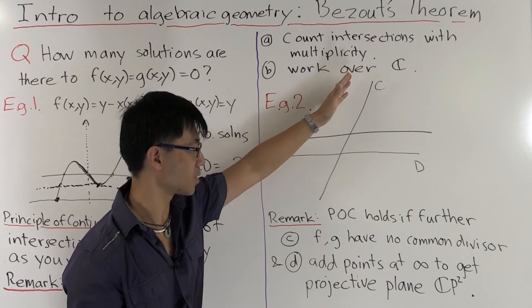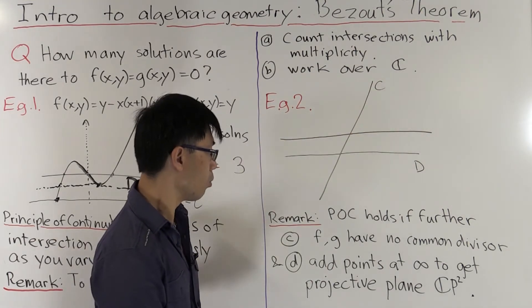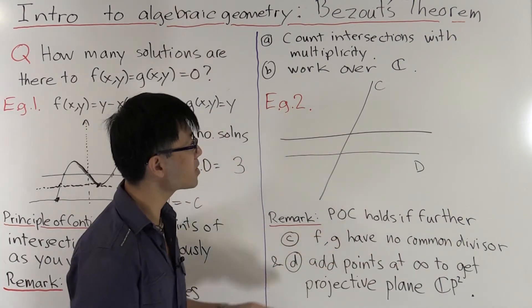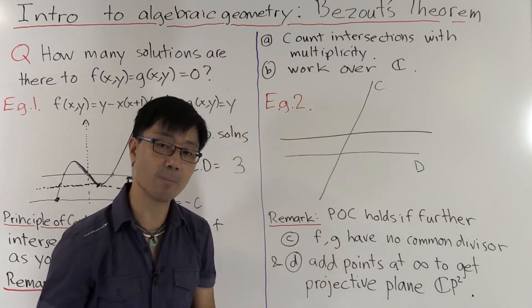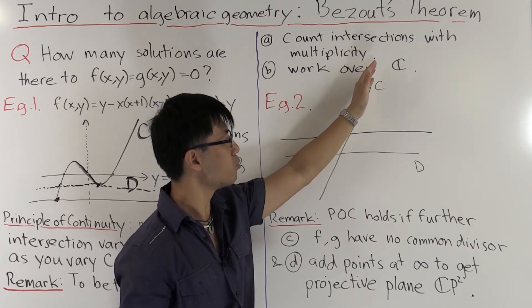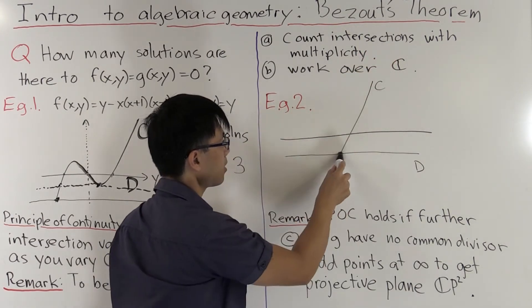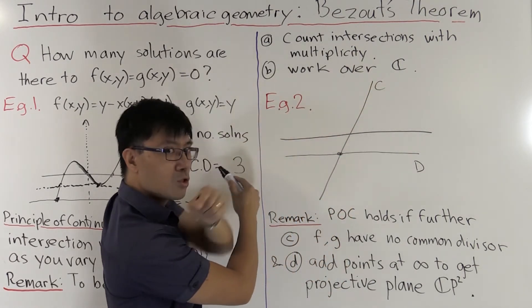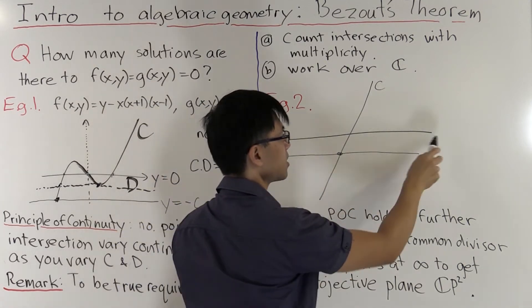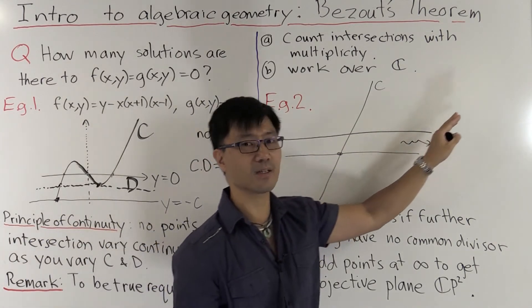The first thing is that we exclude the case where you have the same curve. More generally, we require that F and G have no common divisor — if they do, there's going to be an infinite number of points of intersection. The other issue is the point that disappeared when rotating to a parallel line: as you rotate, the intersection moves off to infinity. To preserve the principle of continuity, we need to add an extra point at infinity.